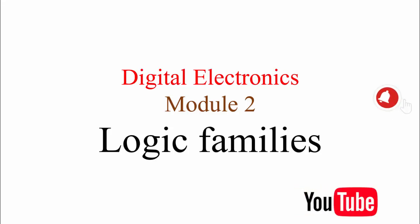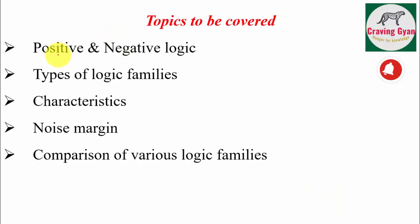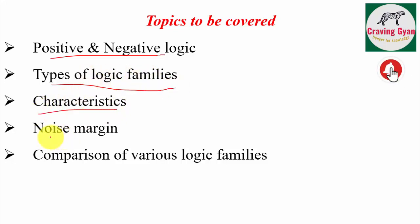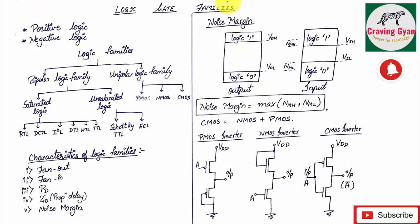In this video, let us talk about logic families in digital electronics. The topics covered are: what do you mean by positive logic and negative logic, what are the types of logic families available, what are their characteristics, what do you mean by noise margin, and a comparison of various logic families with respect to fan-in, fan-out, power dissipation, noise margin, and figure of merit.